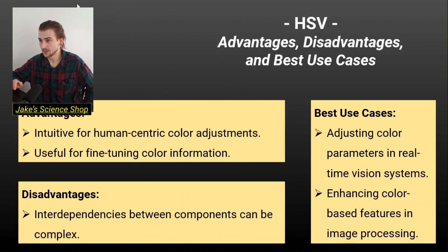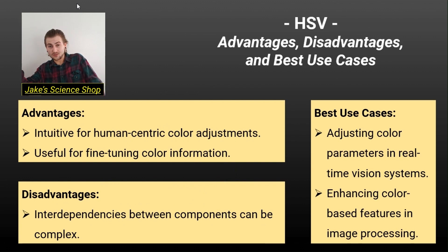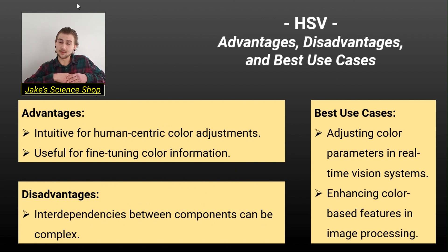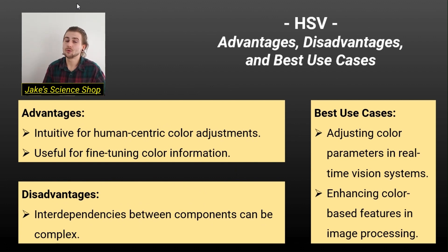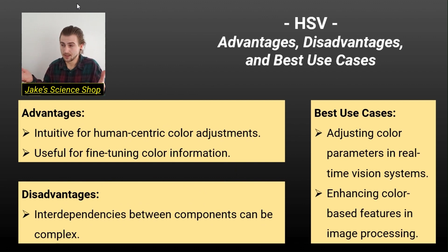The advantages of the HSB model are that it helps us model the way we perceive light, which is helpful for computer vision and robotics. For autonomous driving to be truly possible, we need to pair the way in which we see and process things with computers, so that they can get the same results through a different machine.